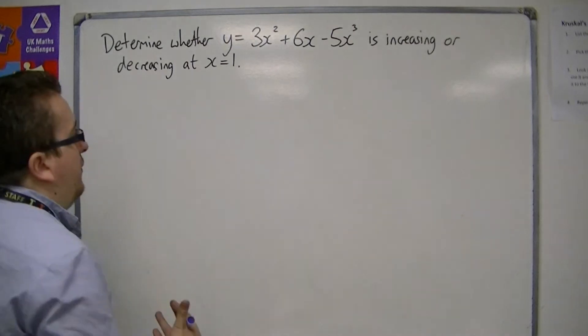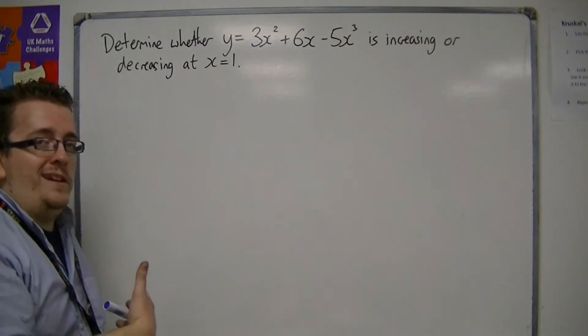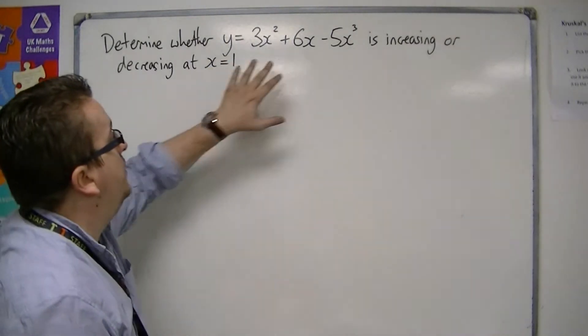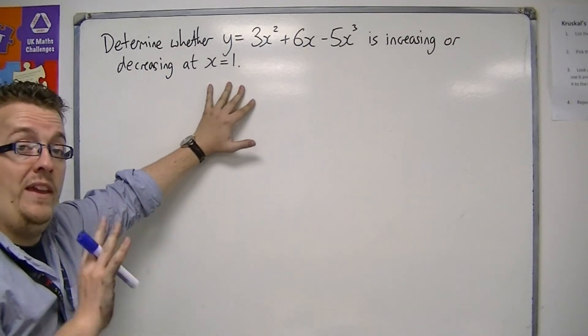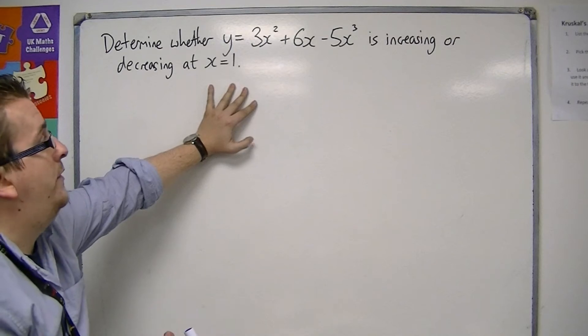So we want to be able to work out the gradient of the tangent at x equals 1. If it is positive, then the curve is increasing, and if it's negative, the curve is decreasing.